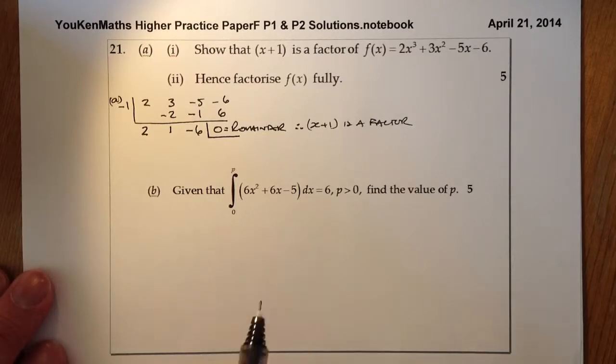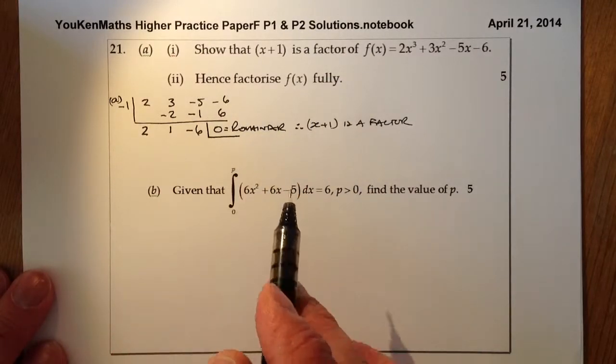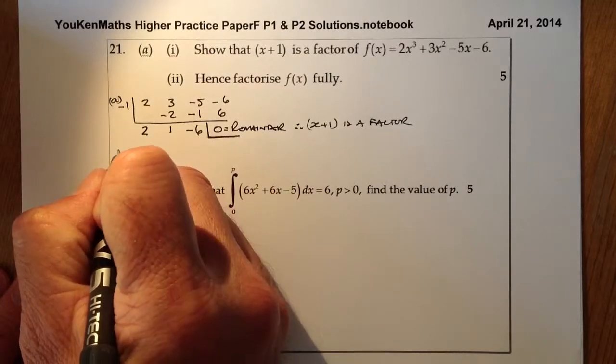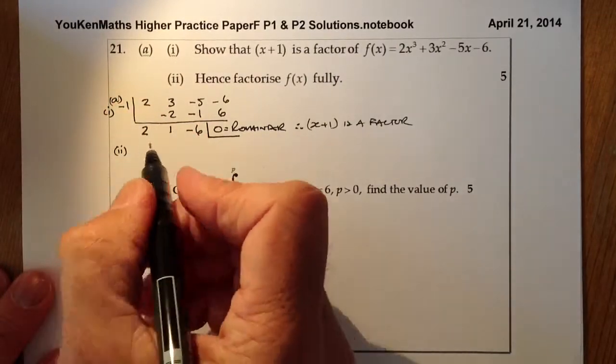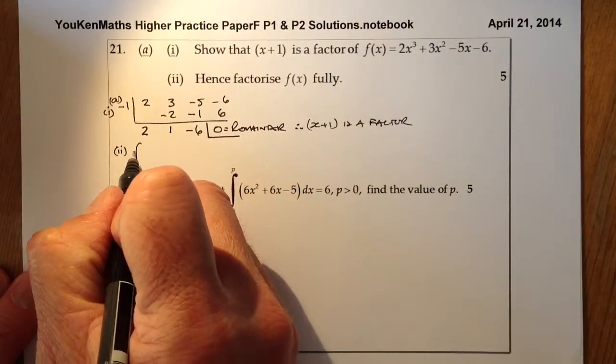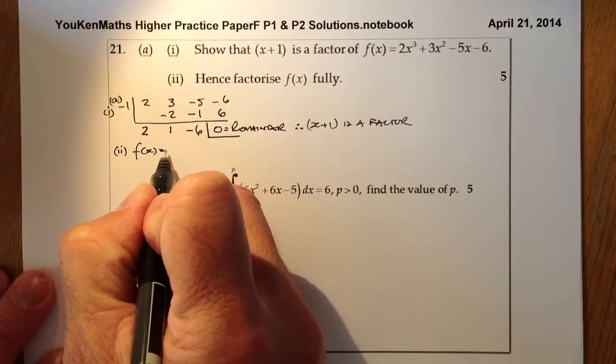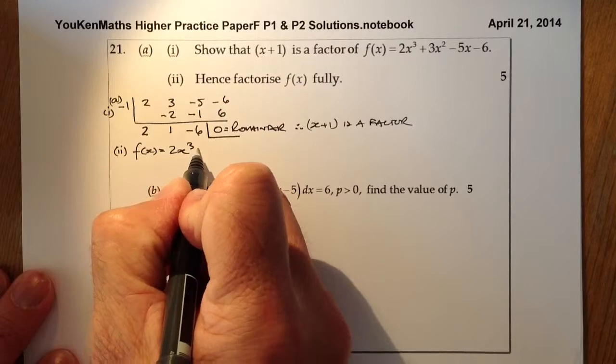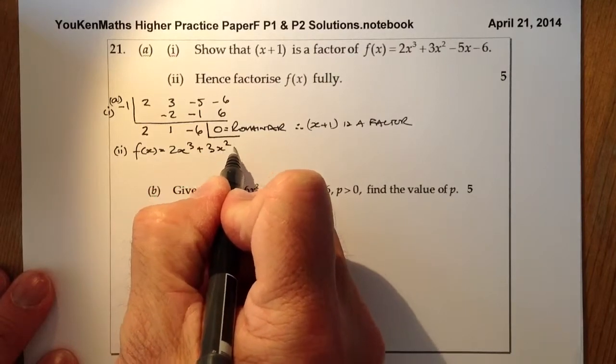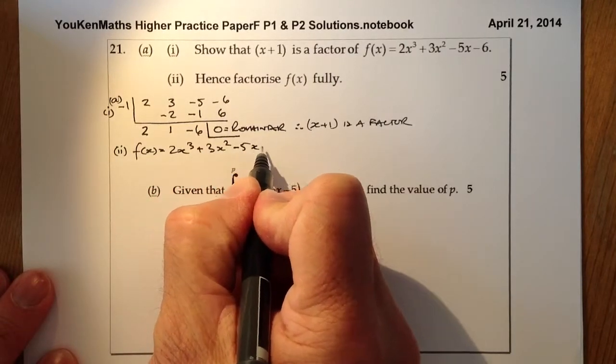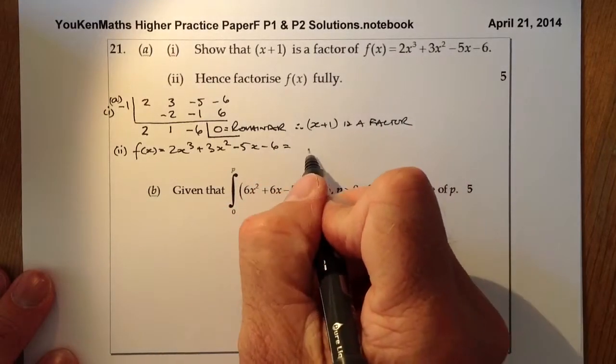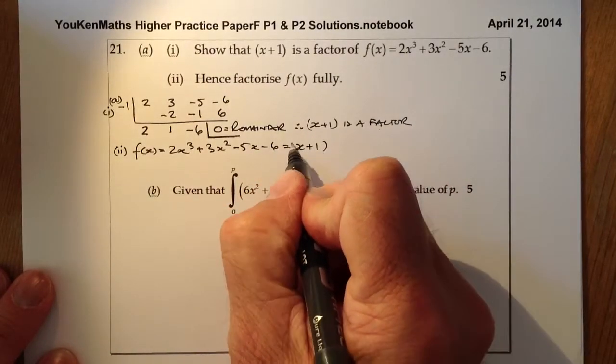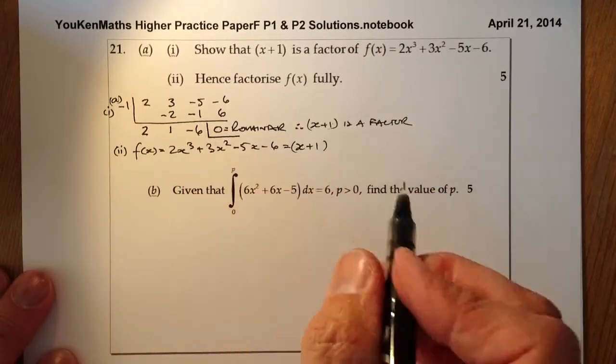Let's go on to part 2 and factorise this fully. We'll start with f(x) = 2x³ + 3x² - 5x - 6. I know that x + 1 is the first factor, so I've just proven that's a factor.